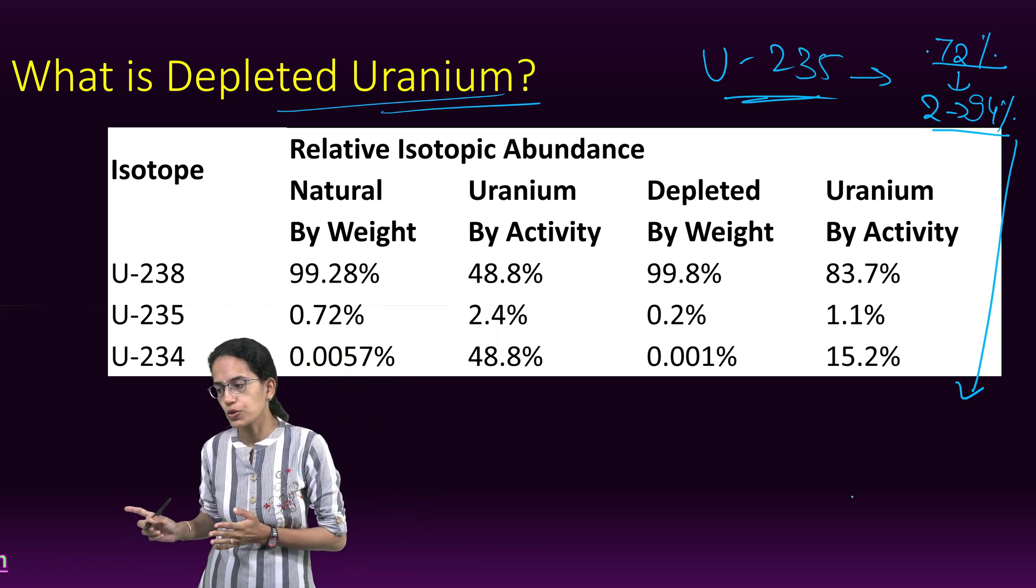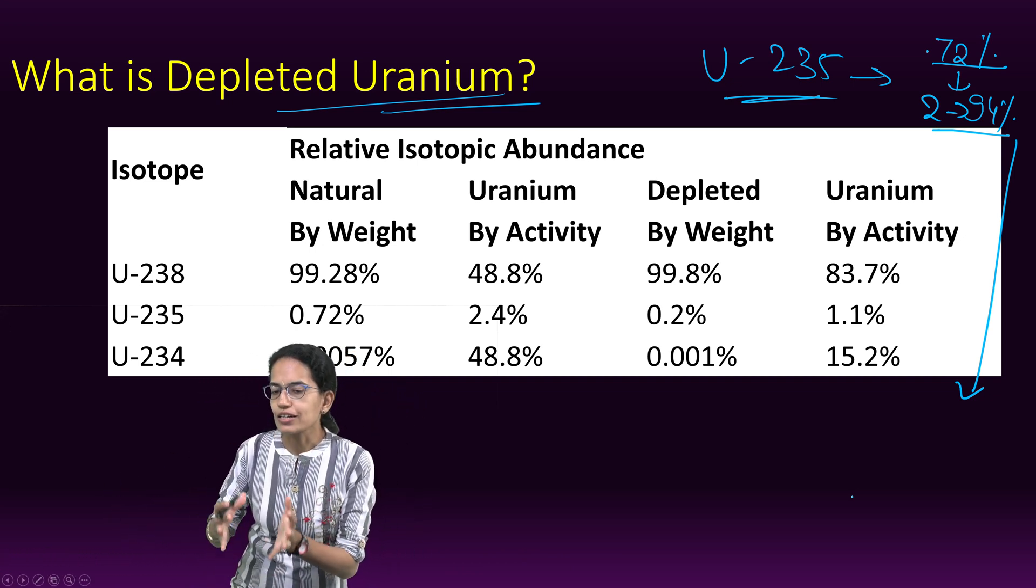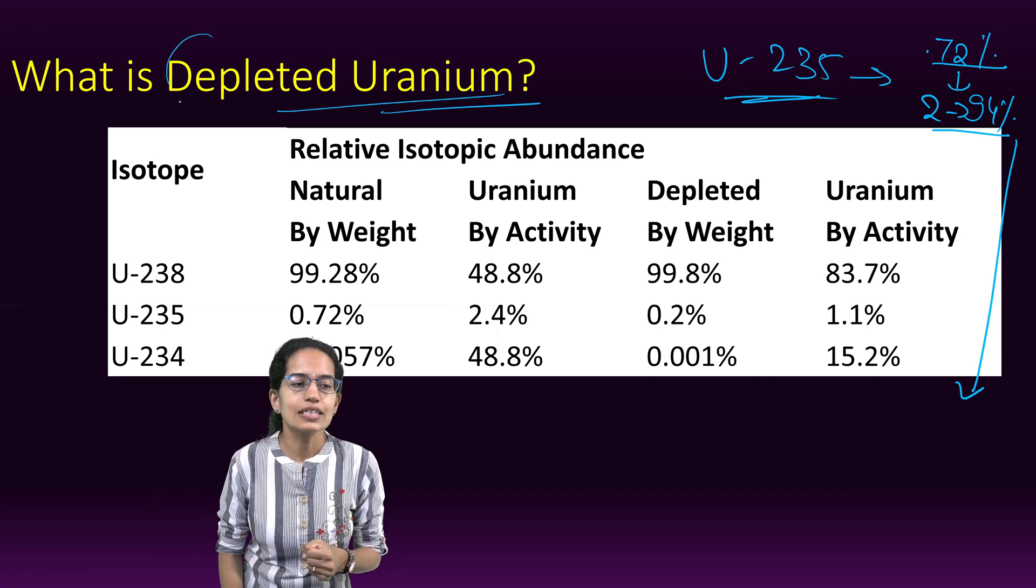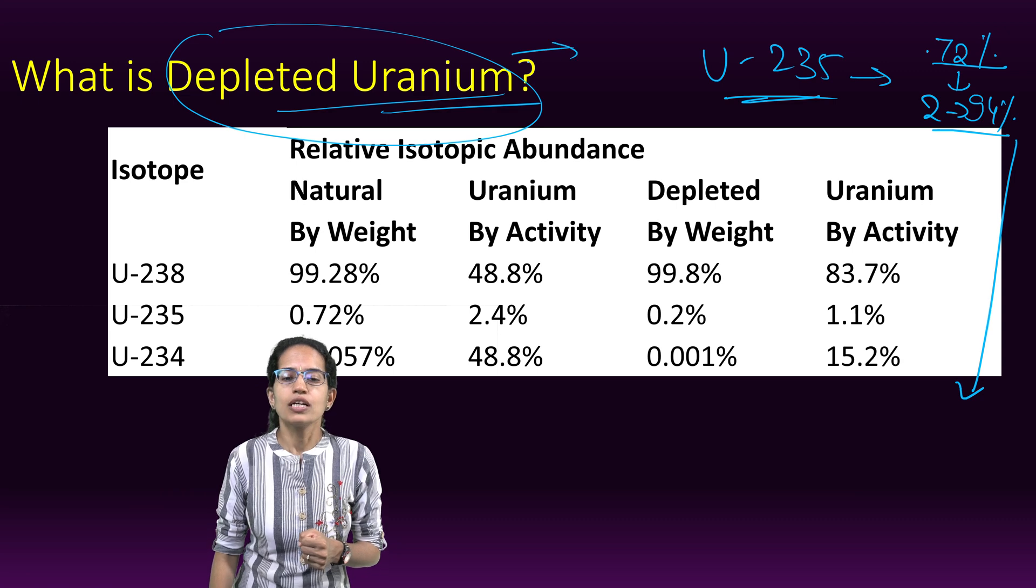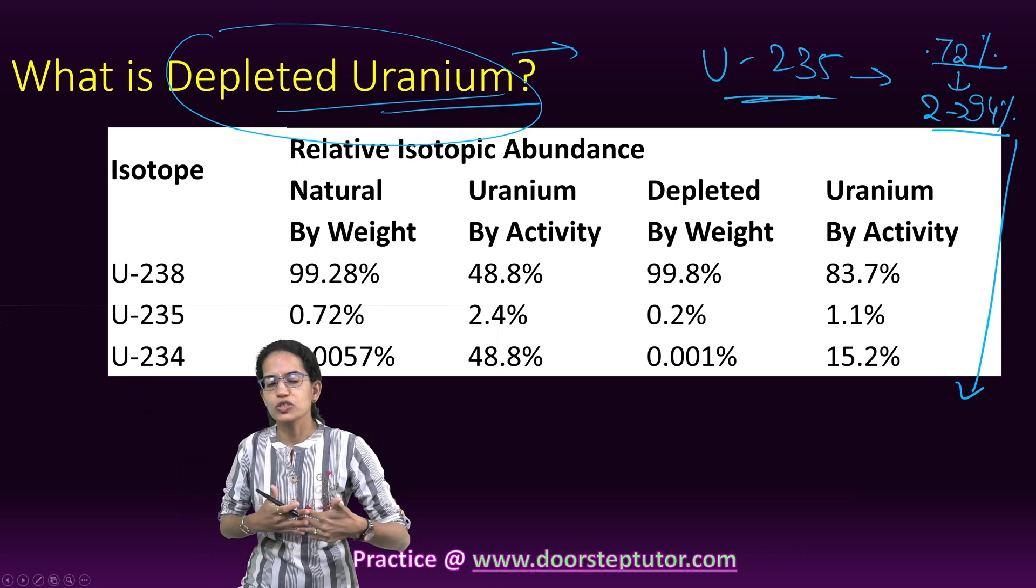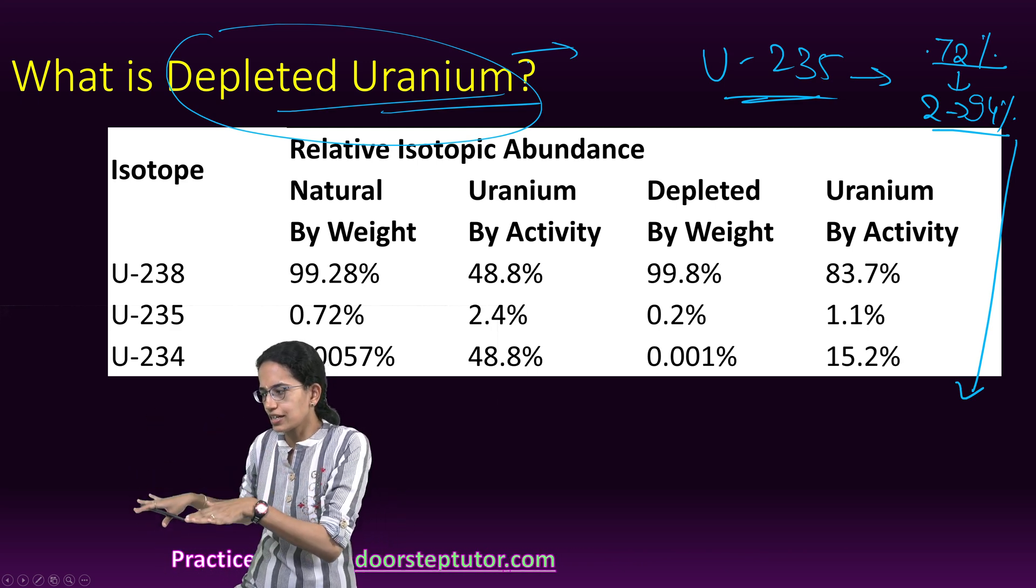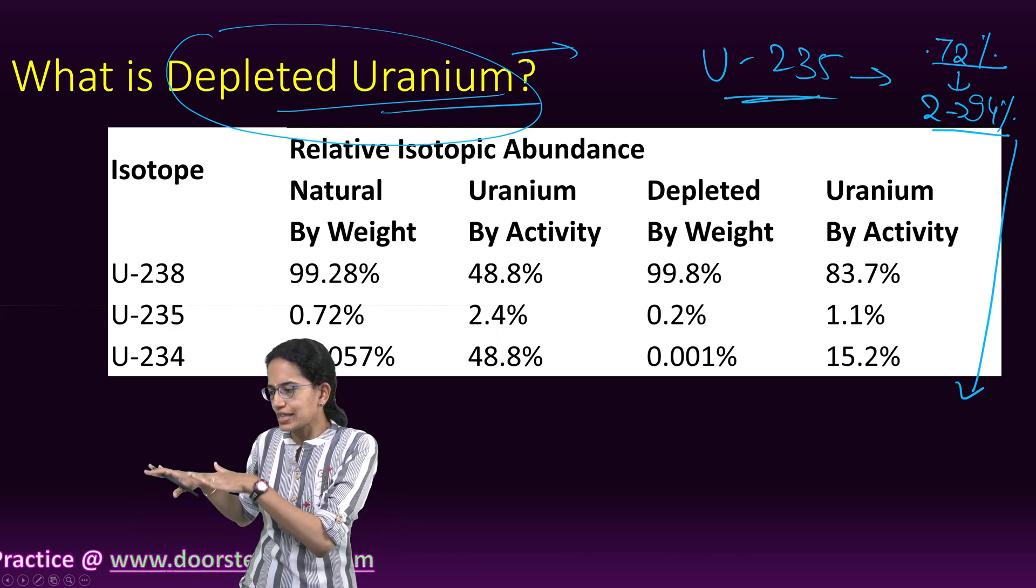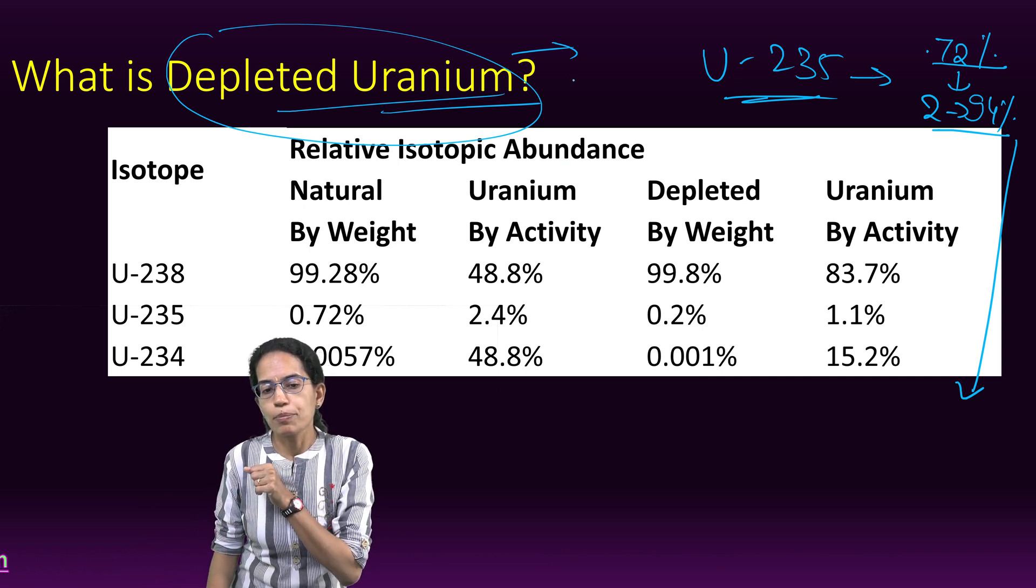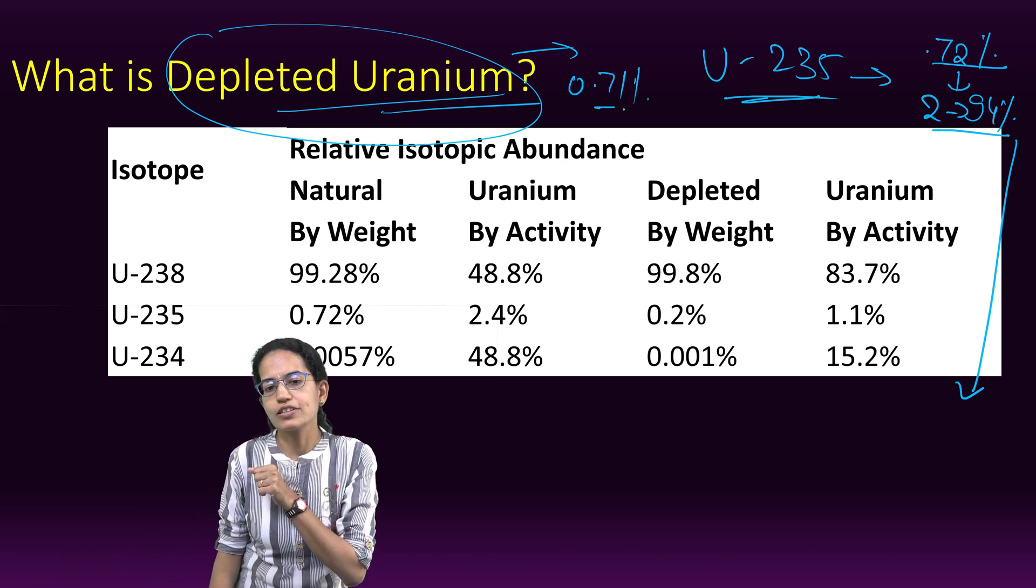The byproduct of this process is known as depleted uranium. The enriched uranium is separated out, and the byproduct has a relatively lesser amount of U-235 in it. This is depleted uranium.